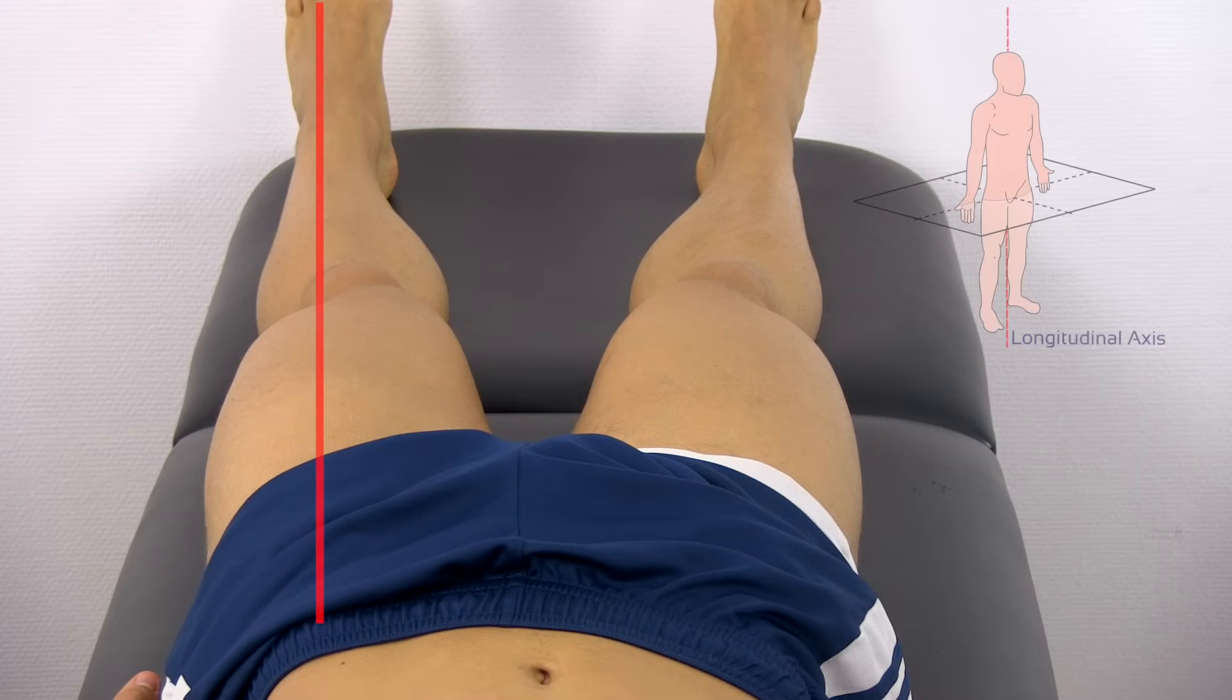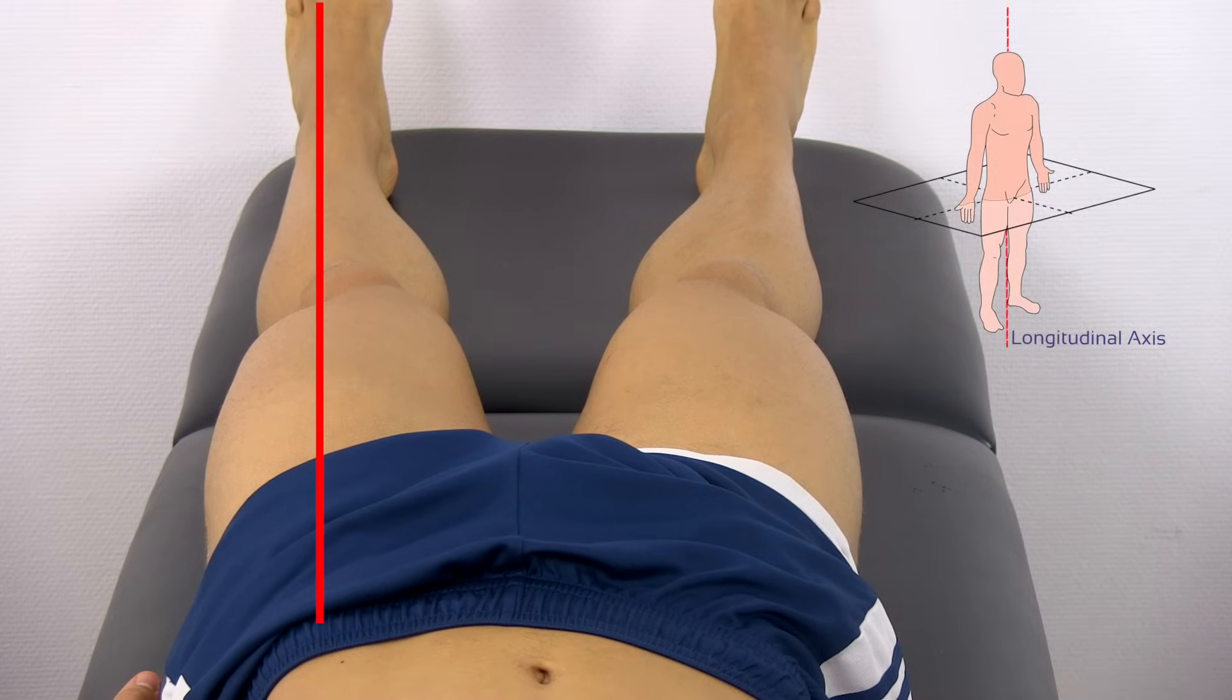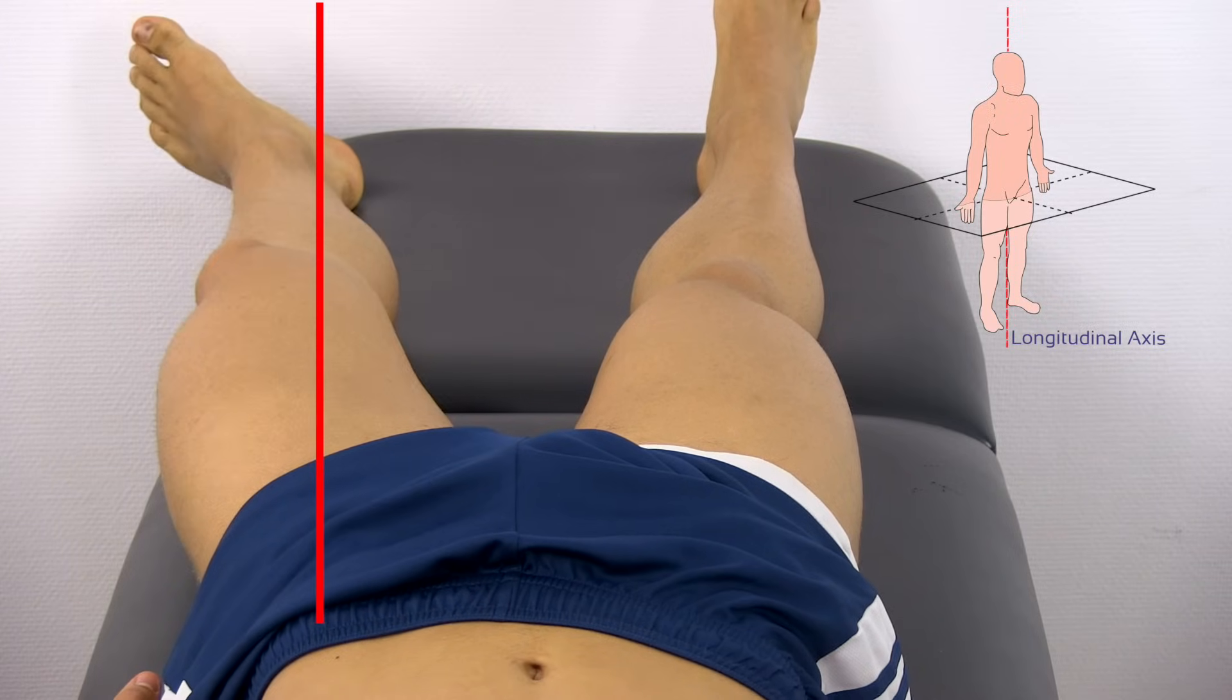The movements of the hip in the transversal plane around the longitudinal axis are called external or lateral rotation.